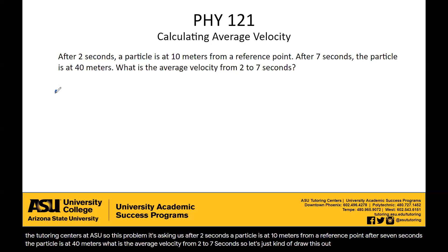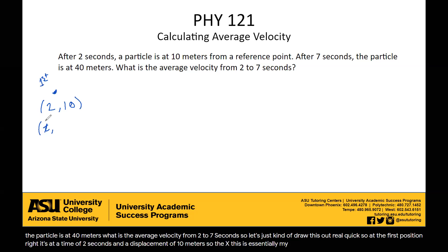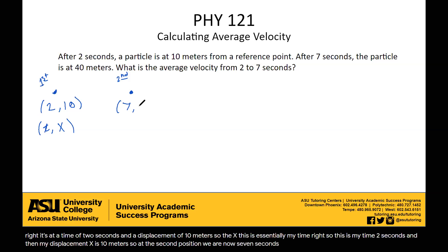Let's just draw this out real quick. At the first position, it's at a time of 2 seconds and a displacement of 10 meters. So this is my time — 2 seconds — and my displacement x is 10 meters. At the second position, we are now at 7 seconds and 40 meters away. So again, this is the t value and this is the x value.